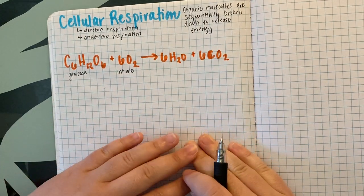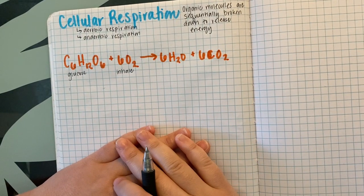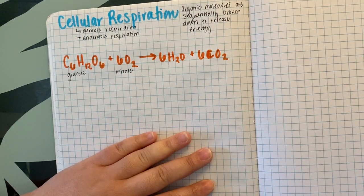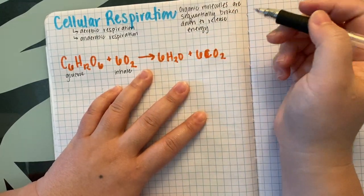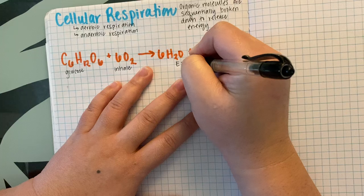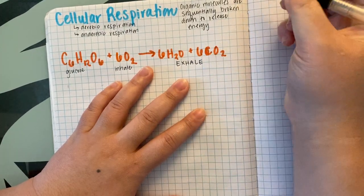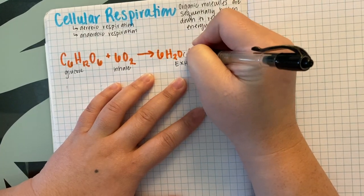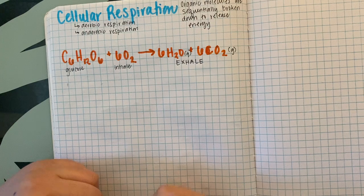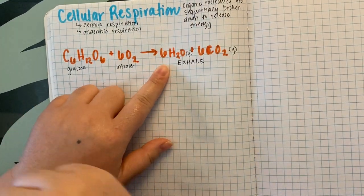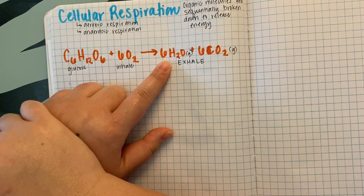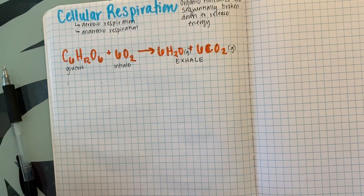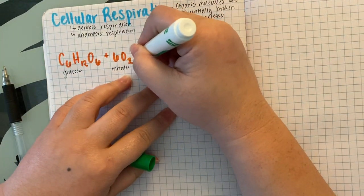Oxygen is something we inhale — it's atmospheric. For aquatic organisms, there's dissolved oxygen in the water that can diffuse across their gills. The two products — water and carbon dioxide — are actually both waste products that we exhale. The water is exhaled as water vapor, which is why on cold days you can see your breath as the water vapor condenses.